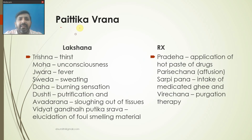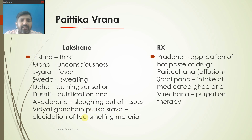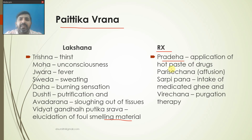Pittaja Vrana will have symptoms like Trishna, Moha, Jvara, Sveda, Daha, Bhrama, Avadharana, then Vidhyat Gandha, and Putishrava or exudation of foul-smelling material. The treatment for Pittaja Vrana is Pradeha - application of coat paste of drugs - Parishek or affusion therapy, Sarpipana (intake of medicated ghee), and Virechana or purgation therapy.